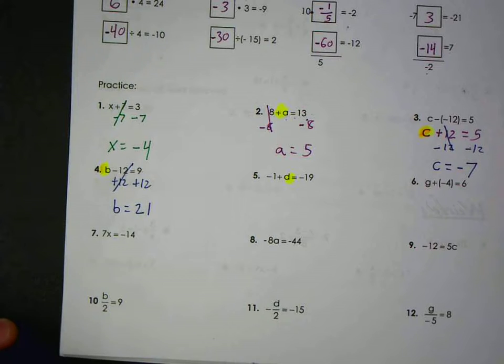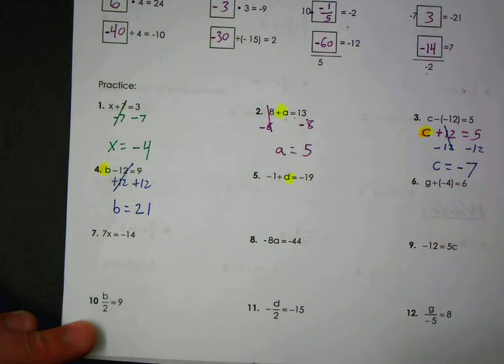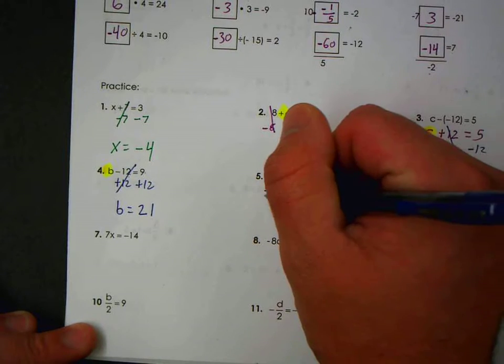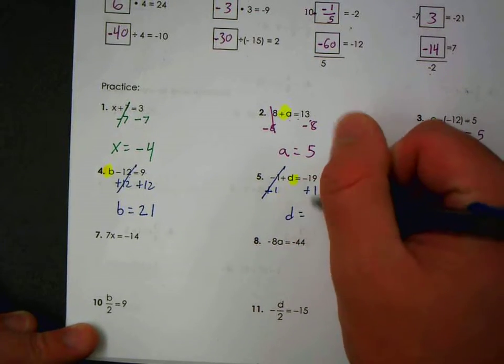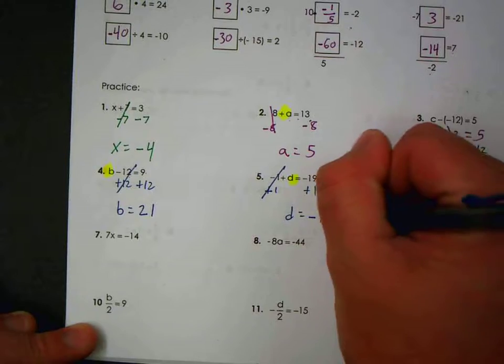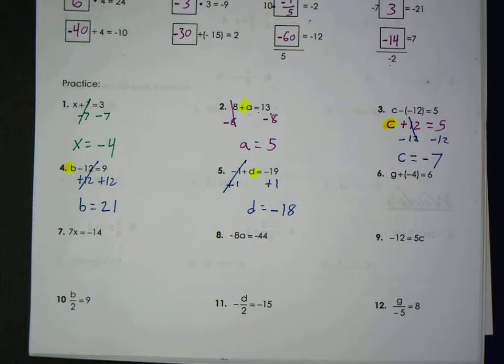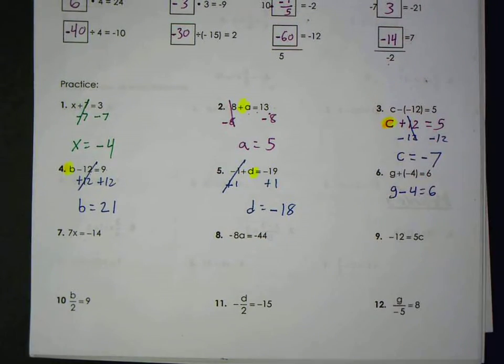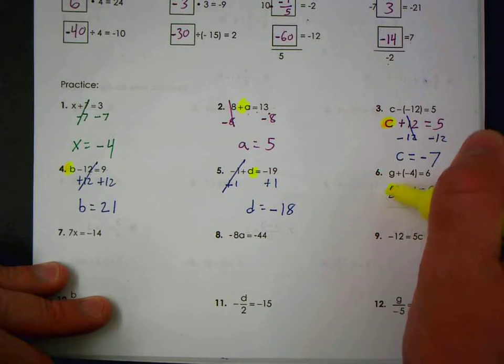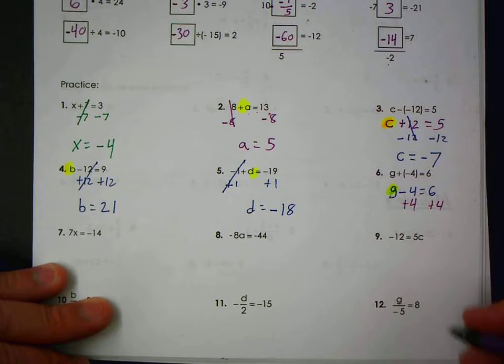Negative one plus what is negative nineteen? So I need to get rid of the negative one, so I would add one because negative one plus one is zero. Anything plus zero is itself. And then I'd get d equals negative nineteen plus one, negative eighteen. Number six, anytime you have a plus with a negative, you can change that to just minus if that's less confusing. I'm trying to solve for g, so I add four. Opposite.